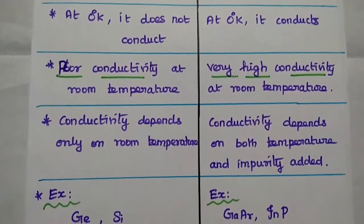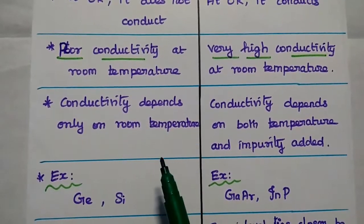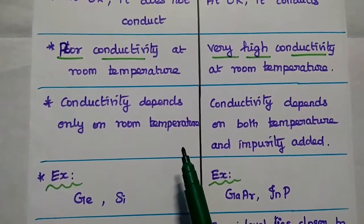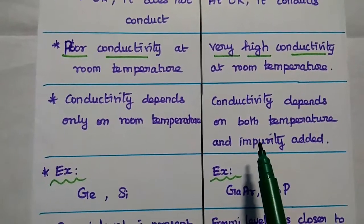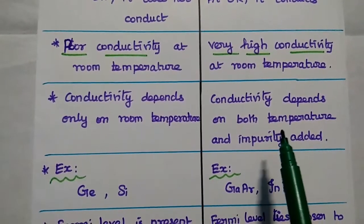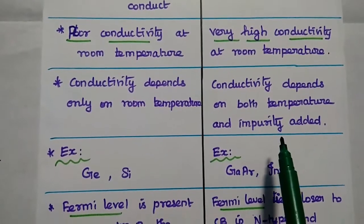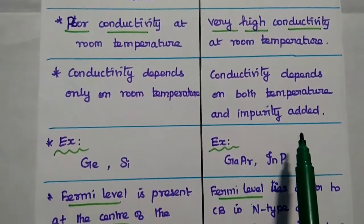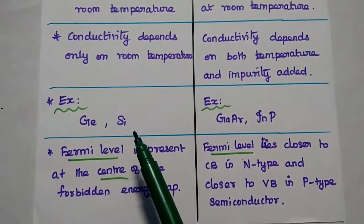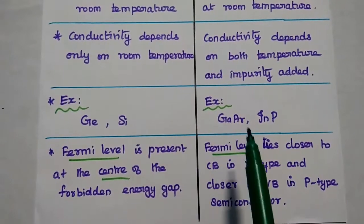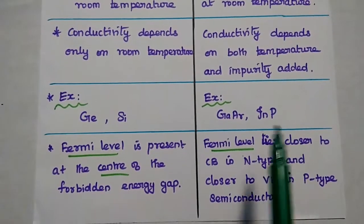Intrinsic semiconductor has poor conductivity at room temperature. Extrinsic semiconductor has very high conductivity at room temperature. The conductivity of intrinsic semiconductor depends only on temperature, but for extrinsic semiconductor, conductivity depends on both temperature as well as the impurity added. Examples of intrinsic semiconductors: germanium, silicon, gallium arsenide, indium phosphate.